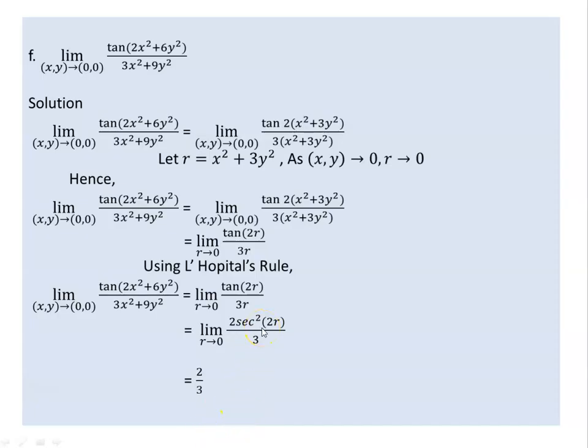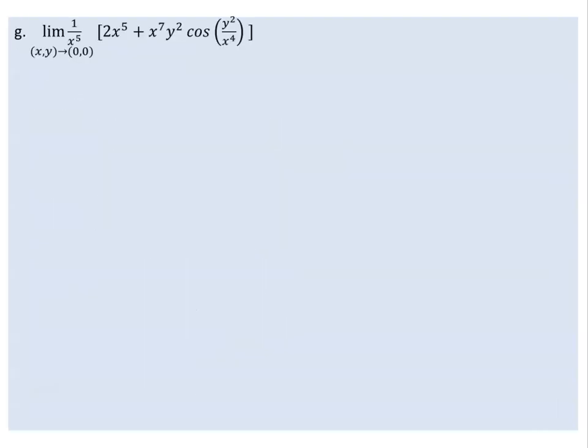So 1 times 2/3 gives us 2 over 3. As (x, y) approaches (0, 0), the function approaches 2/3. That is the limit of the first problem.